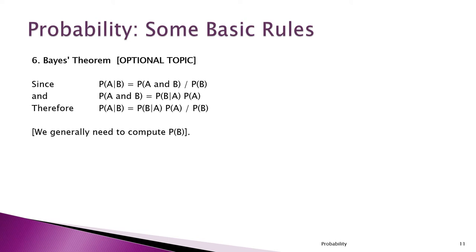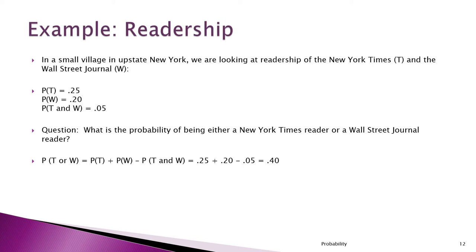Here we have a simple example looking at readership of two newspapers — the New York Times and the Wall Street Journal. In this village, the probability that an individual reads the New York Times is 0.25, the probability of reading the Wall Street Journal is 0.20, and the probability of reading both is 0.05. The question is: what's the probability of reading either one?